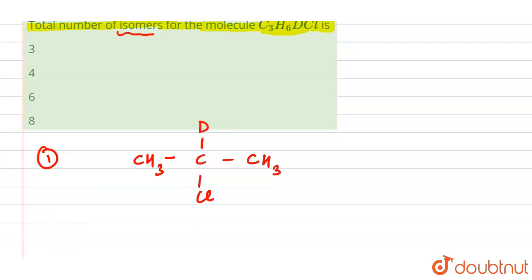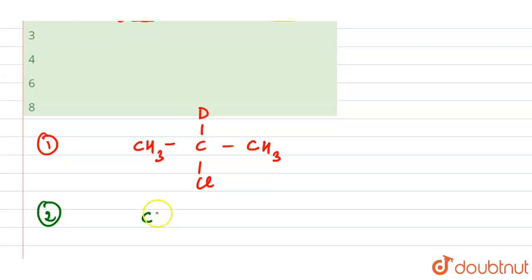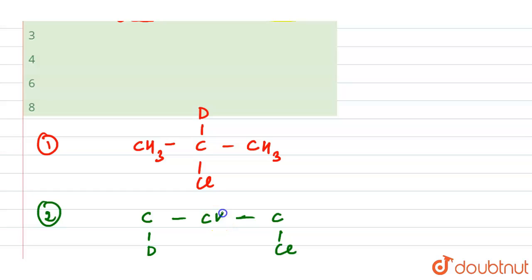For the second structure, we place D on one carbon and Cl on another carbon in the chain, giving us a CH₂-CH₂ arrangement. This is our second distinct structure.